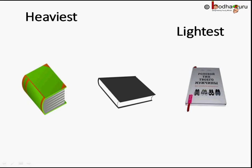The green book is the heaviest because it has lots of pages. But the white book is lightest as it has very few pages.